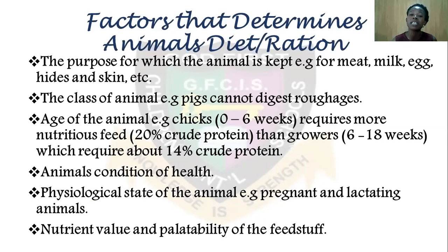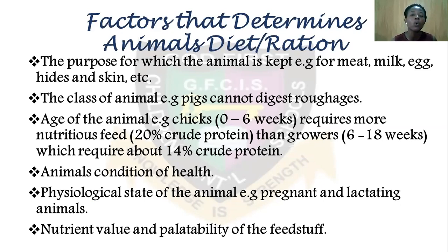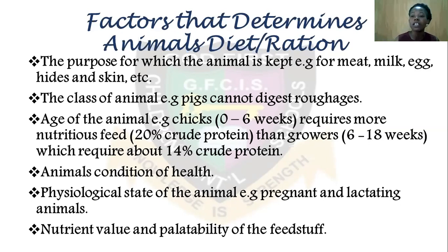Now, factors that will determine the type of ration given to an animal: number one and most important is the purpose for which the animal is kept. The purpose determines the type of ration — for example, for meat, for eggs, for hide and skin, there are particular feeds given to each. Another factor is the class of animal. For example, pigs cannot digest roughage; they don't have four stomach compartments for that, so they cannot be fed high-roughage feed. Poultry also cannot digest roughage — they feed mainly on grains.